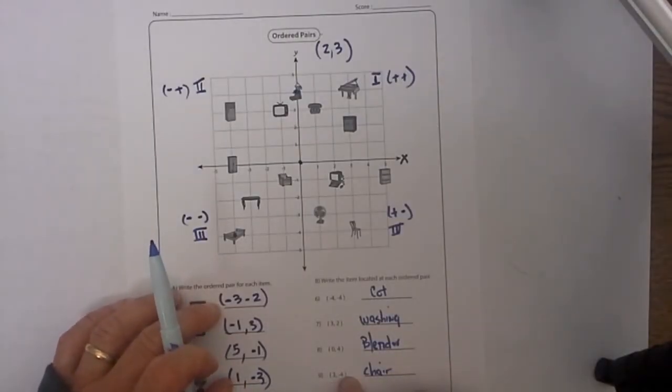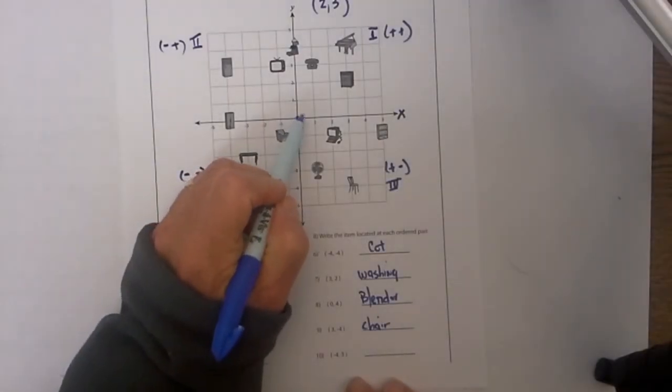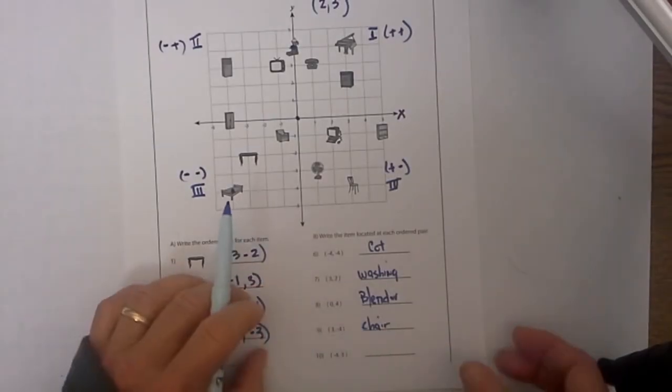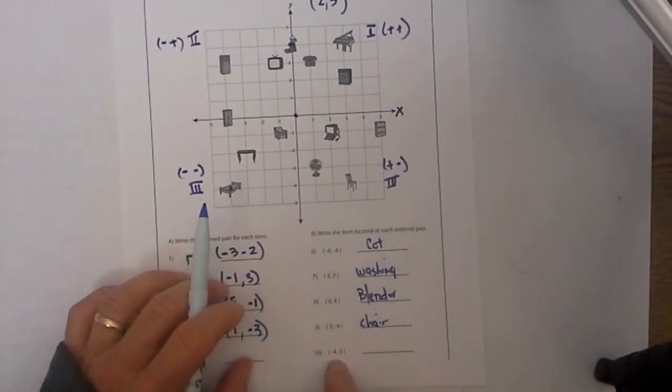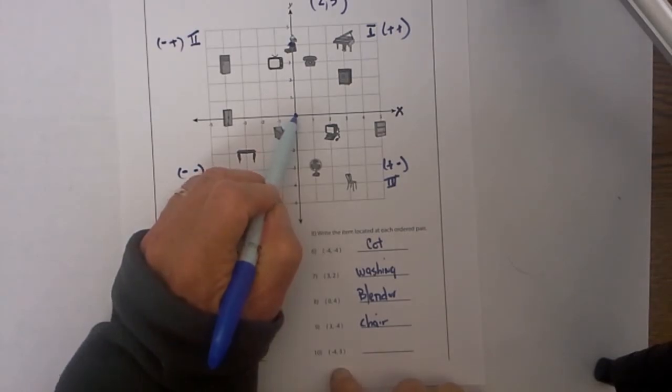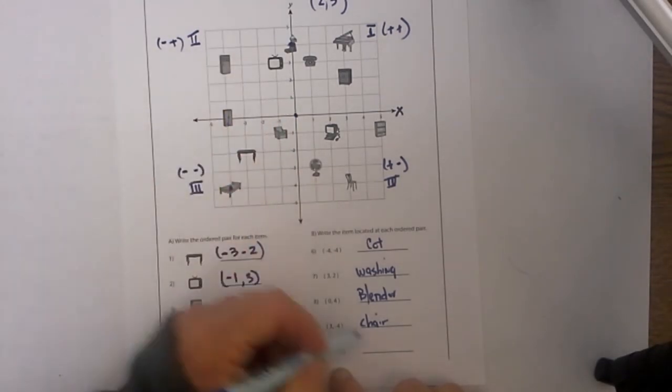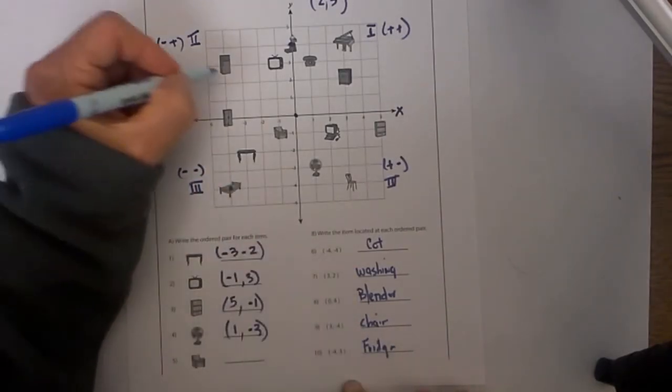We have 3, negative 4. We start at the origin, move over 3, down negative 4 and that is the chair. Last but not least we have negative 4, 3. We start at the origin, go over negative 4, up 3 and that is the fridge which is right here.